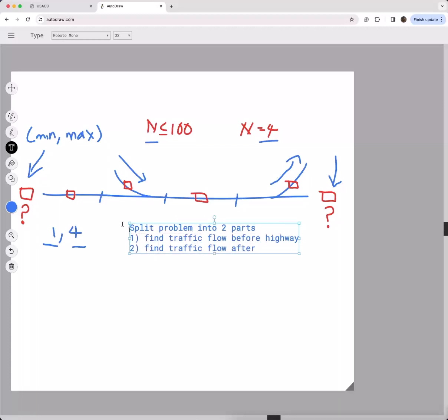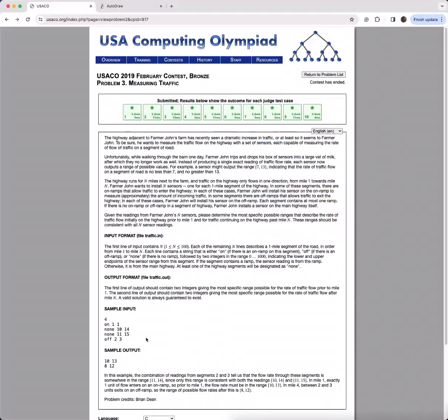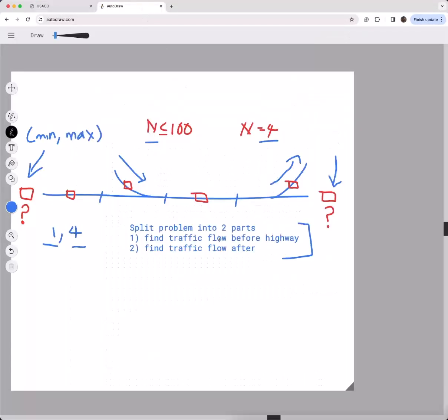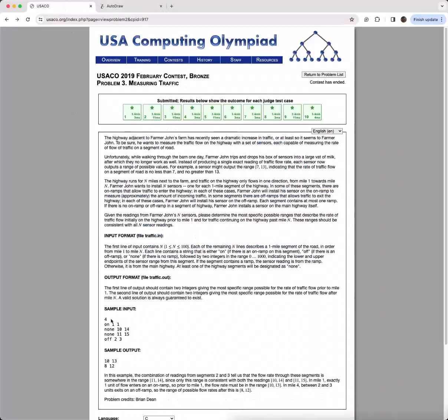We want to look at these as two distinct parts of the problem. Once we've made that observation, we can focus on how we can find the solution to the first part—find traffic flow before the highway.